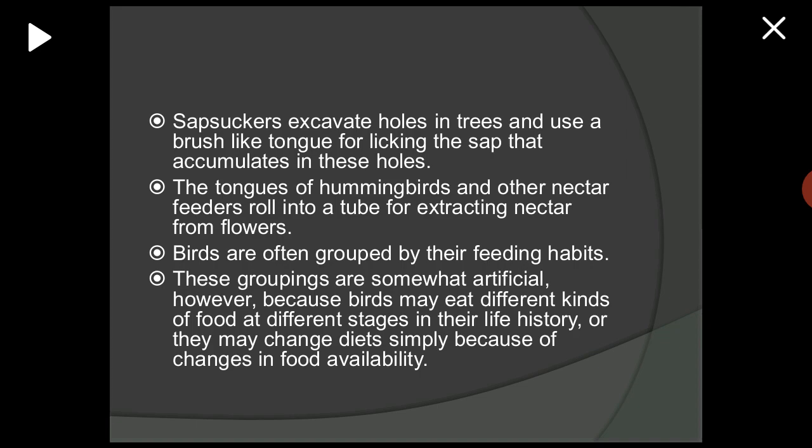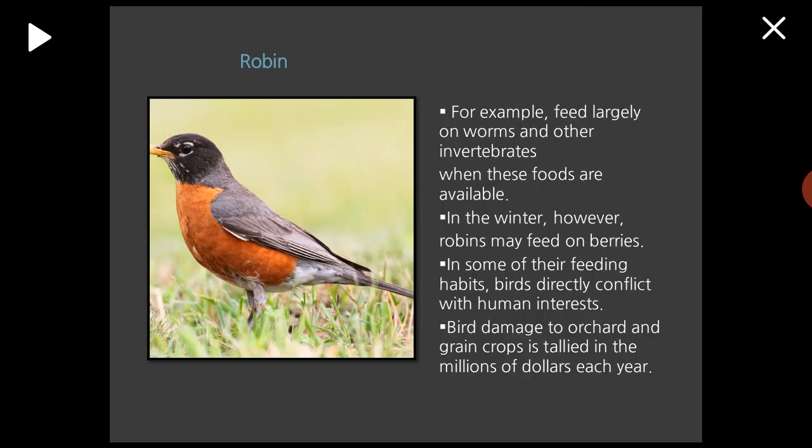Birds are often grouped by their feeding habits. These groups are somewhat artificial, however, because birds may eat different kinds of food at different stages in their life history, or they may change diets simply because of changes in food availability. For example, the robin feeds largely on worms and other invertebrates when these foods are available, but in winter, robins may feed on berries.